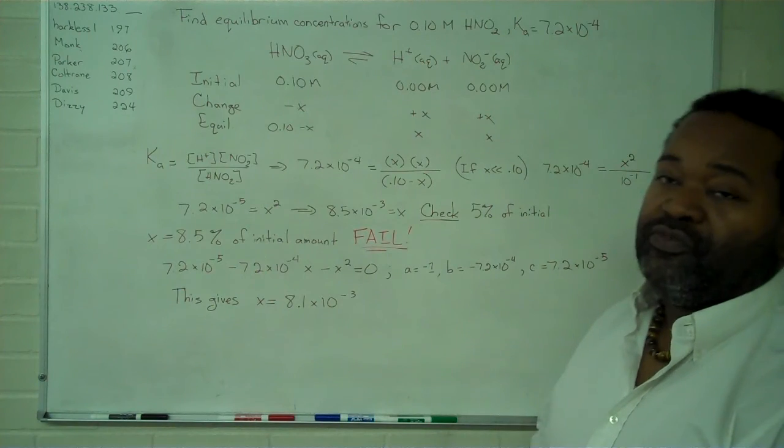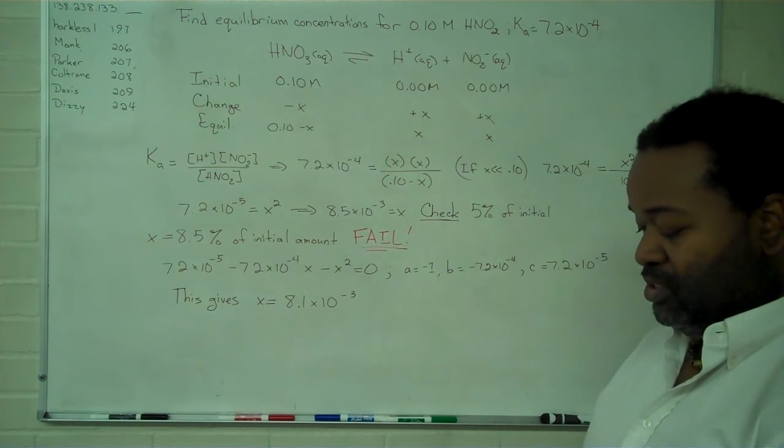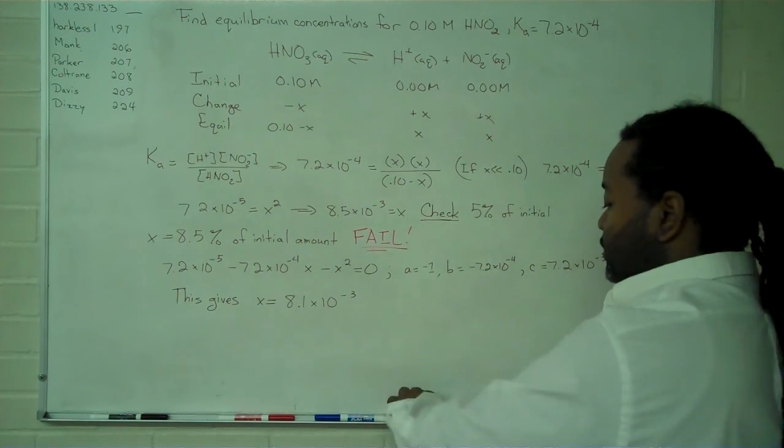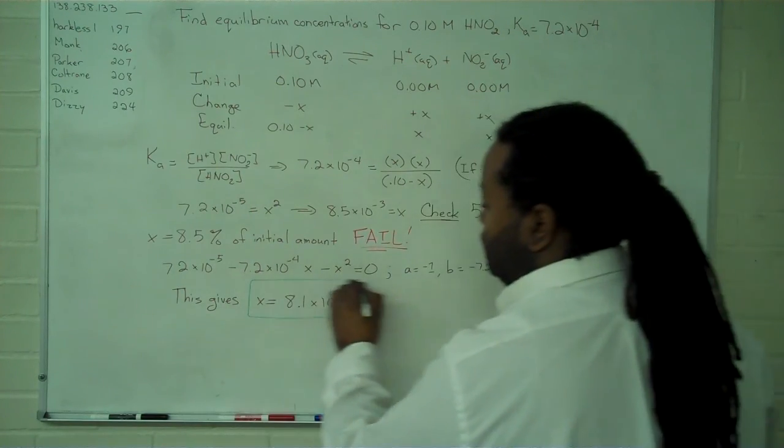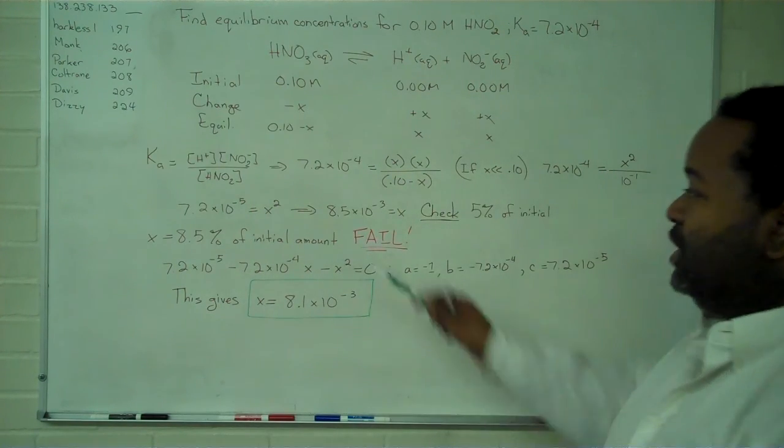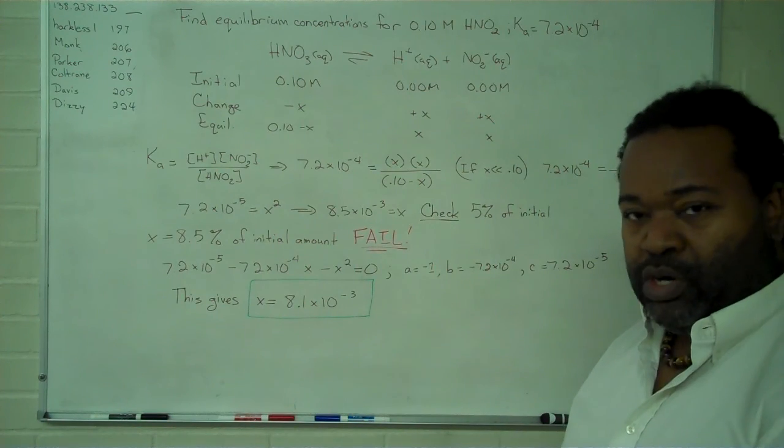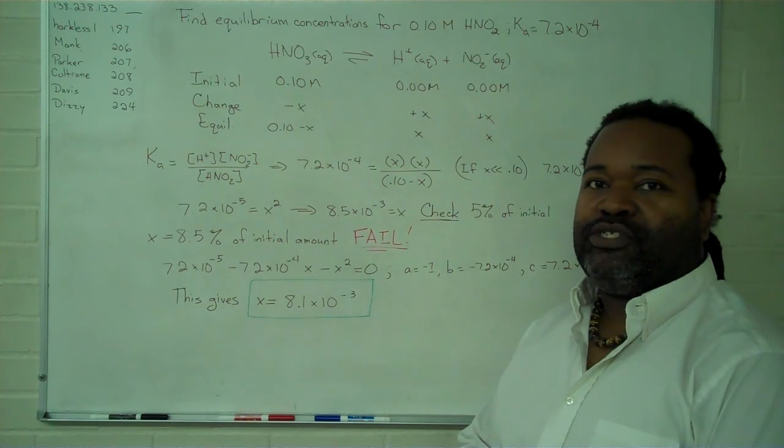And so, this is different from the amount we found using the approximation method. This is the correct value because the approximated amount is more than 5% of the original.